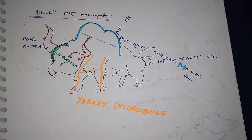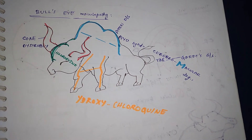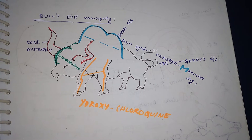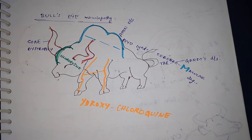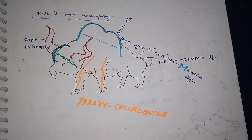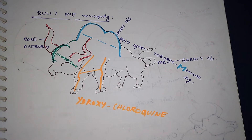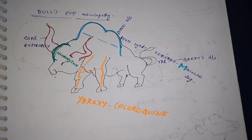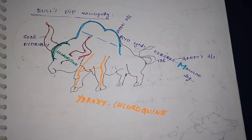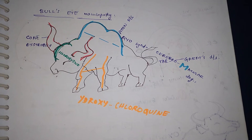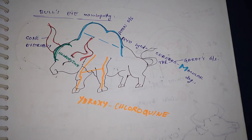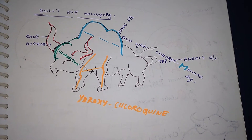Hi guys, welcome back to Medical Mnemonics Pocket. Today our topic is bull's eye maculopathy differential diagnosis. Our mnemonic is a picture of a bull, and as you can see, all the famous differential diagnoses of bull's eye maculopathy can be seen in this picture.